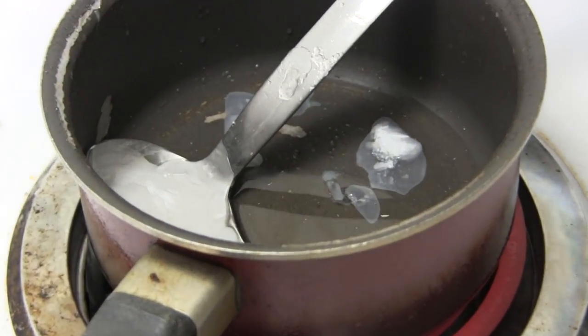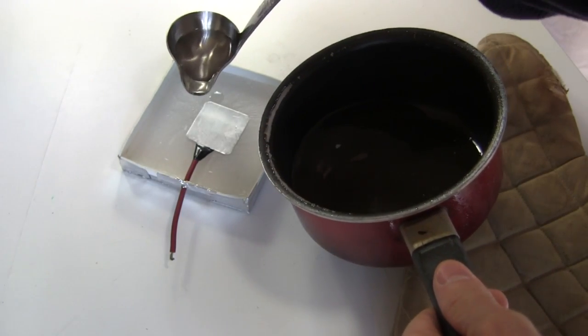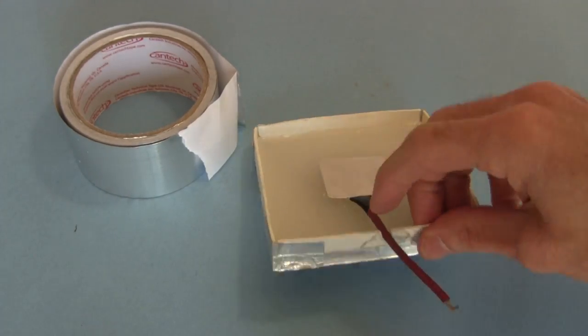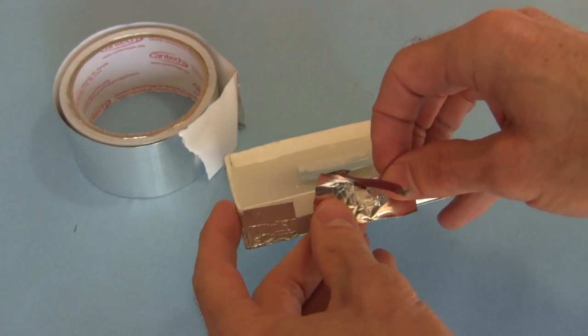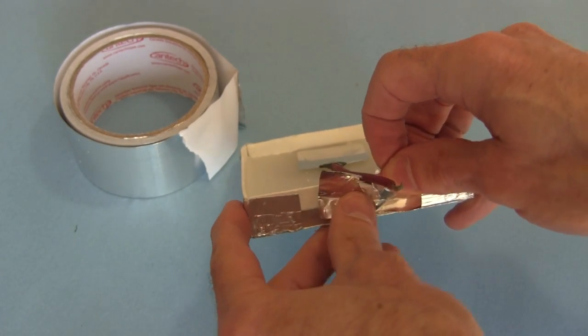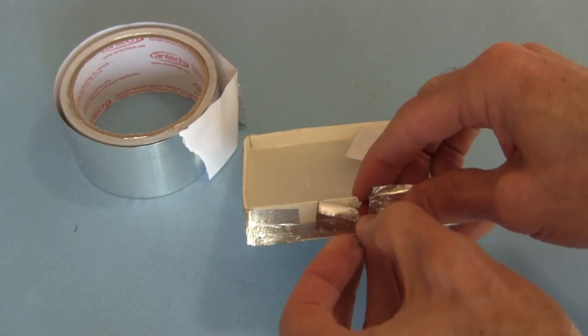For the wax, I heat it up on the stove and then pour it over the capacitor. Sometimes I need to make a mold for this. If you keep the wax just above the temperature at which it melts, you can use aluminum tape to hold your mold together. But do some tests first.